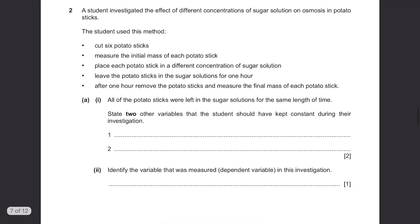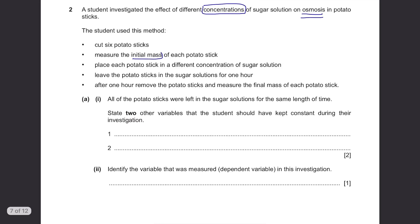Question 2: A student investigated the effect of different concentrations of sugar solution on osmosis in potato sticks. The student used this method: Cut 6 potato sticks, measure the initial mass of each potato stick, place each potato stick in a different concentration of sugar solution. Leave the potato sticks in the sugar solutions for one hour. After one hour, remove the potato sticks and measure the final mass of each potato stick.